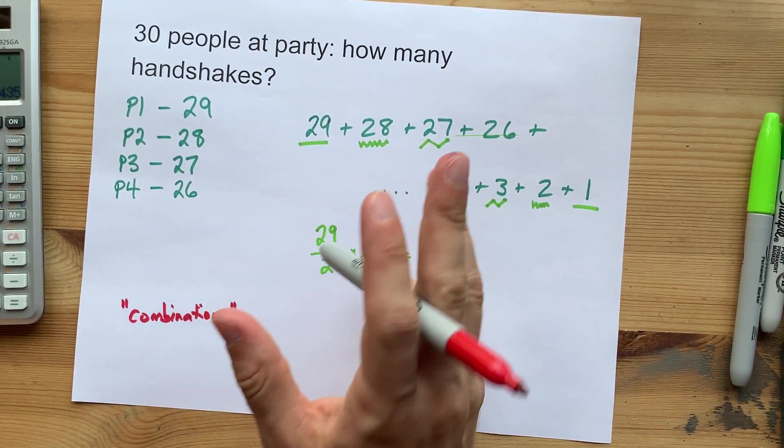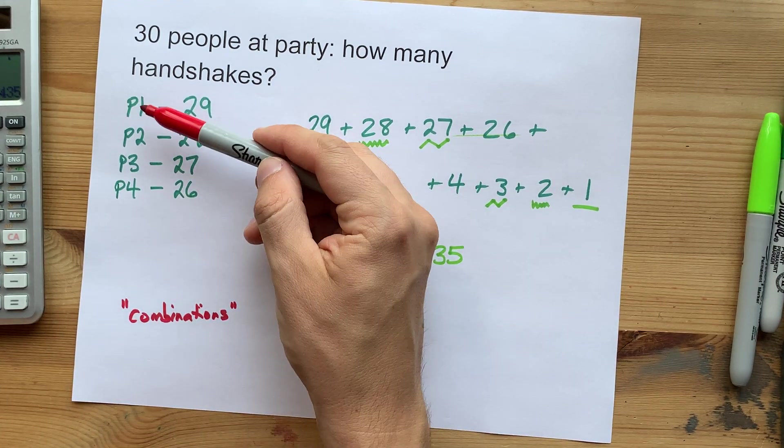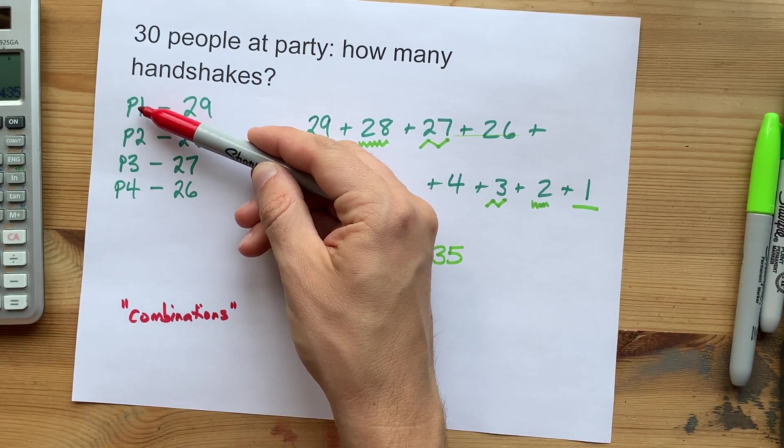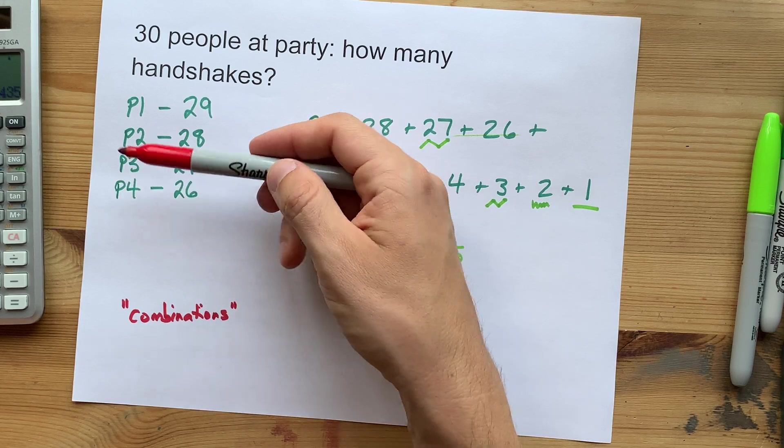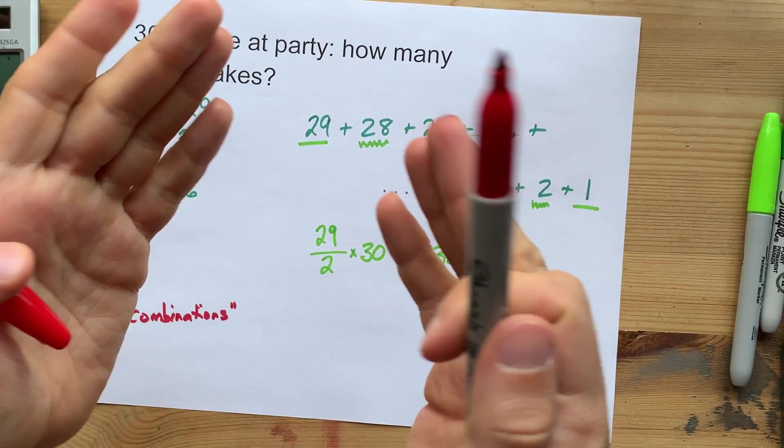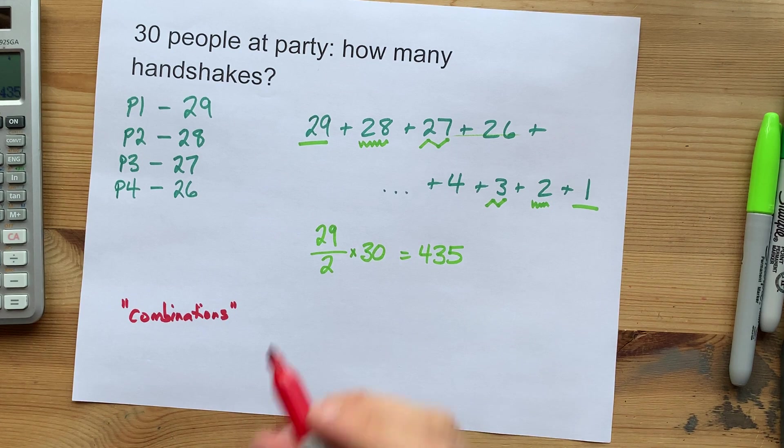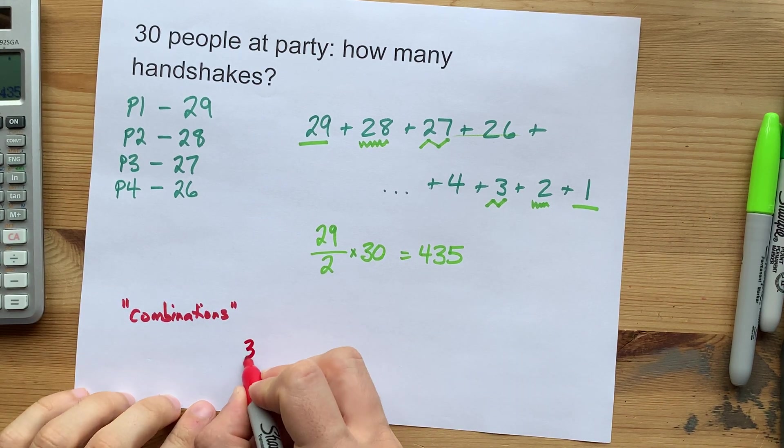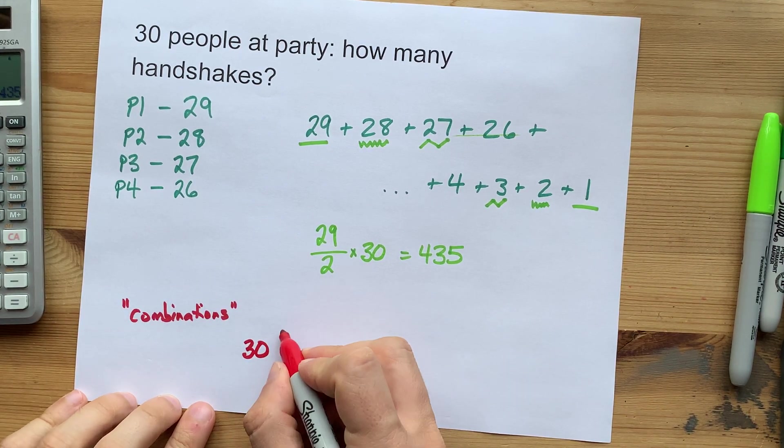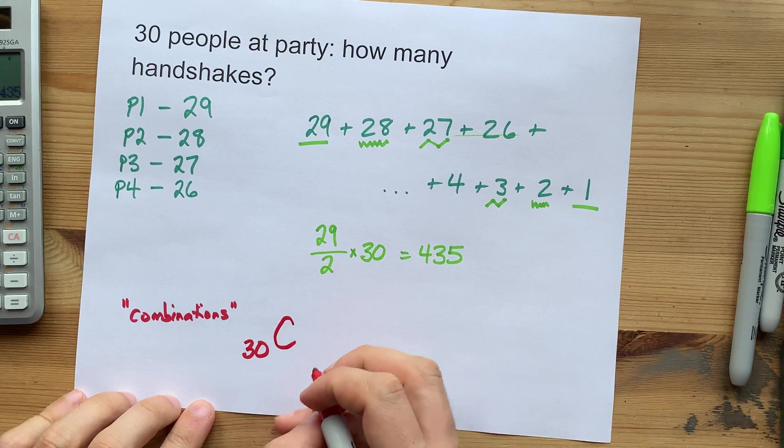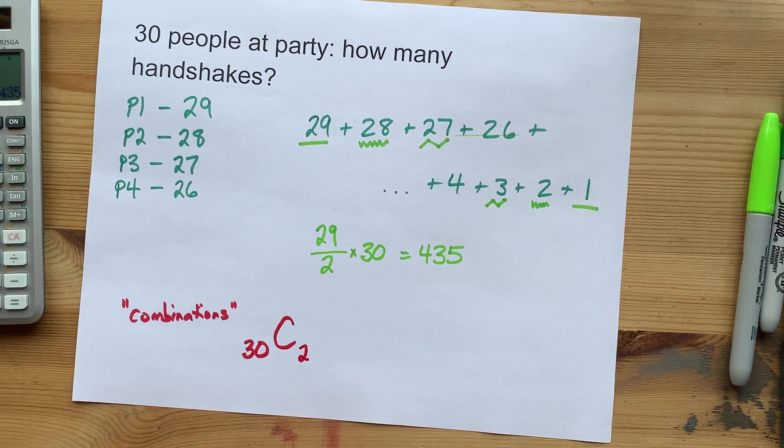And what I mean by that is it doesn't matter if person 1 shook person 2's hand or person 2 shook person 1's hand. Those are the same handshake. So you have 30 people and you are trying to figure out how many combinations you have of two each.